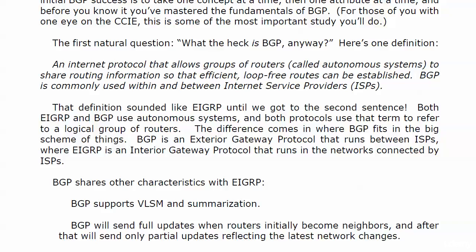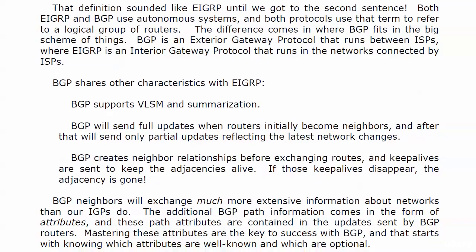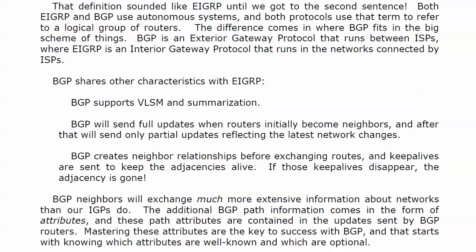I've always put it this way: BGP runs on top of OSPF and EIGRP — it runs higher in the big scheme of things. BGP also shares some other characteristics with EIGRP: it supports VLSM and summarization, and we'll do some summarization in one of the labs. BGP sends full updates when routers initially become neighbors — or in BGP speak, peers — and after that, BGP will only send partial updates reflecting the latest network changes. Because BGP updates can literally contain tens of thousands of entries, we really don't want those going out every 30 seconds like RIP does with the full table — that would not be efficient.